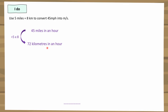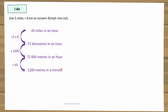So 72 kilometres in an hour — what is that in just metres? 72 kilometres is 72,000 metres. Now I've got my metres, I just need to get the hours into seconds. If they're doing 72,000 metres in an hour, in a minute they will do 60 times less — divide by 60 — that's 1,200 metres in a minute. And what is that in every second? Again, 60 times less, divide by 60, and I get 20 metres in a second.